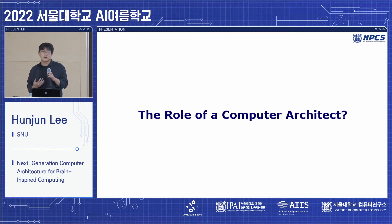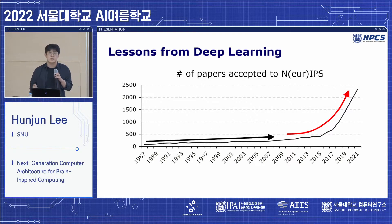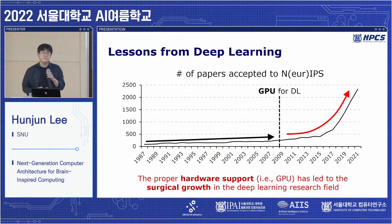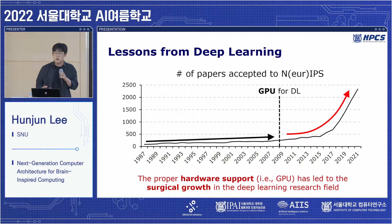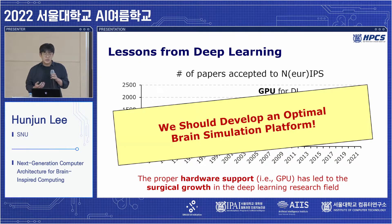So what's the role of a computer architect? I do not major in biology or neuroscience, so what should I do? Let's review how deep learning evolved to become a major research field. The slide shows the number of papers accepted to NeurIPS from 1987 to 2021, and there is exponential growth since around 2009. As a computer architect, what I'd like to emphasize is that GPUs began to be used for deep learning since then, implying that proper hardware support has led to the surge in research. Similarly, we should develop an optimal hardware platform that can simulate the brain.